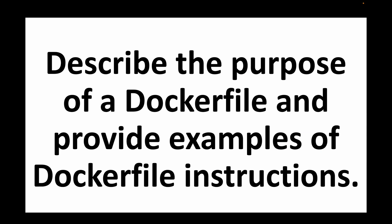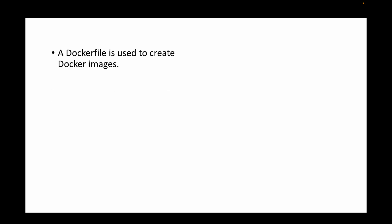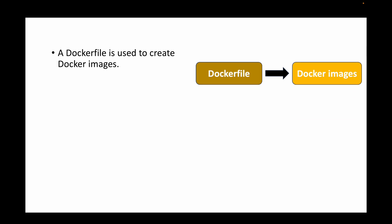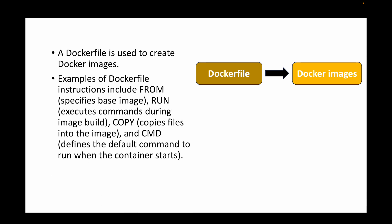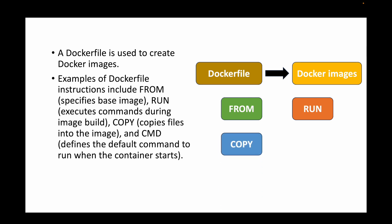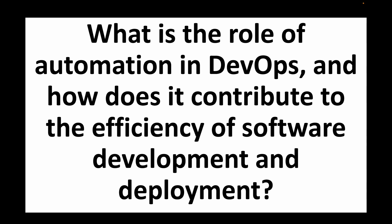The next question is: describe the purpose of a Dockerfile and provide examples of Dockerfile instructions. A Dockerfile contains all the instructions needed to create a Docker image. Common instructions include: FROM, which specifies the base image; RUN, which executes commands during image build; COPY, which copies files into the image; and CMD, which runs default commands when the container starts. There are many more commands, but these are key examples.